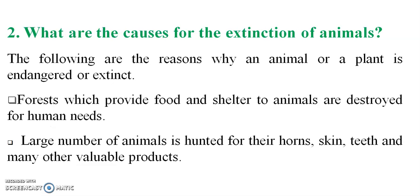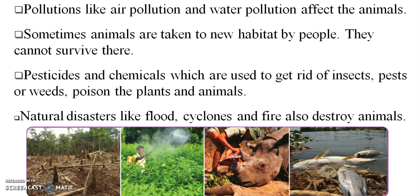What are the causes for extinction of animals? Forests, which provide food and shelter to animals, are destroyed for human needs. Large numbers of animals are hunted for their skin. Pollution such as air pollution is a factor. Animals are sometimes taken to new habitats. Pesticides and chemicals used for killing insects also harm animals. Natural disasters like floods, cyclones, and fires destroy animals.